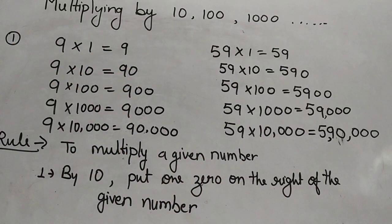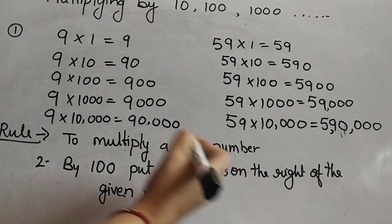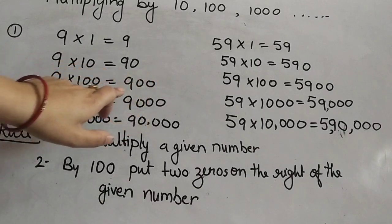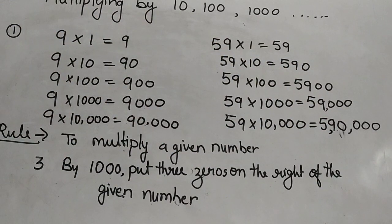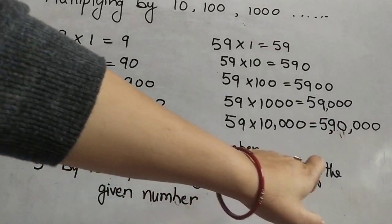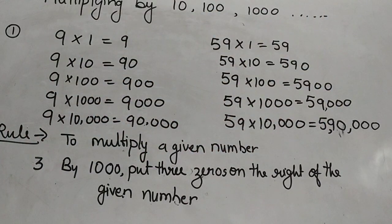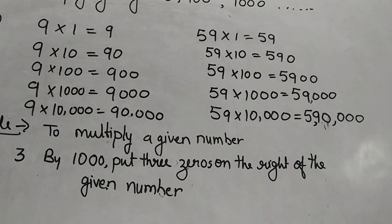59 multiplied by 1,000 equals 59,000; 59 multiplied by 10,000 equals 5,90,000. By the above examples, the rule is: to multiply a given number by 10, put one zero on the right of the given number. Rule 2: to multiply by 100, put two zeros on the right. Rule 3: to multiply by 1,000, put three zeros on the right. Similarly, to multiply by 10,000, put four zeros on the right, and so on.